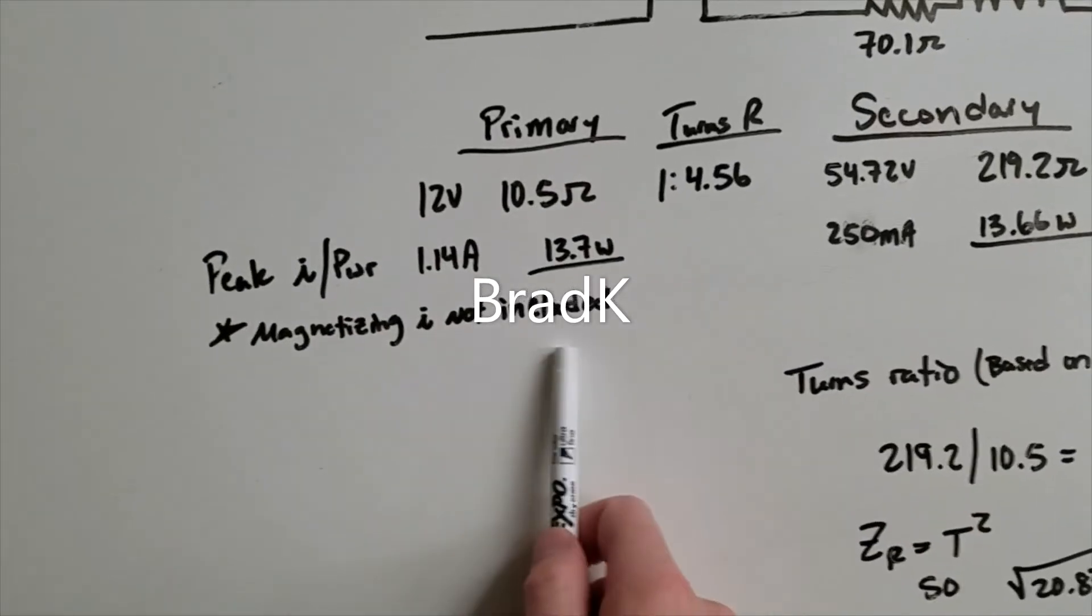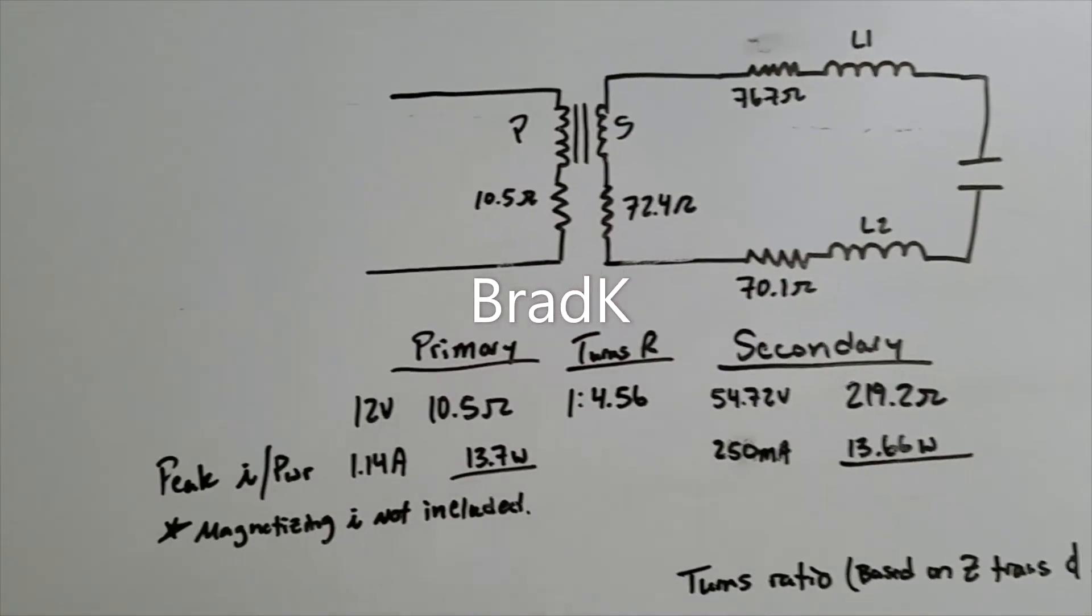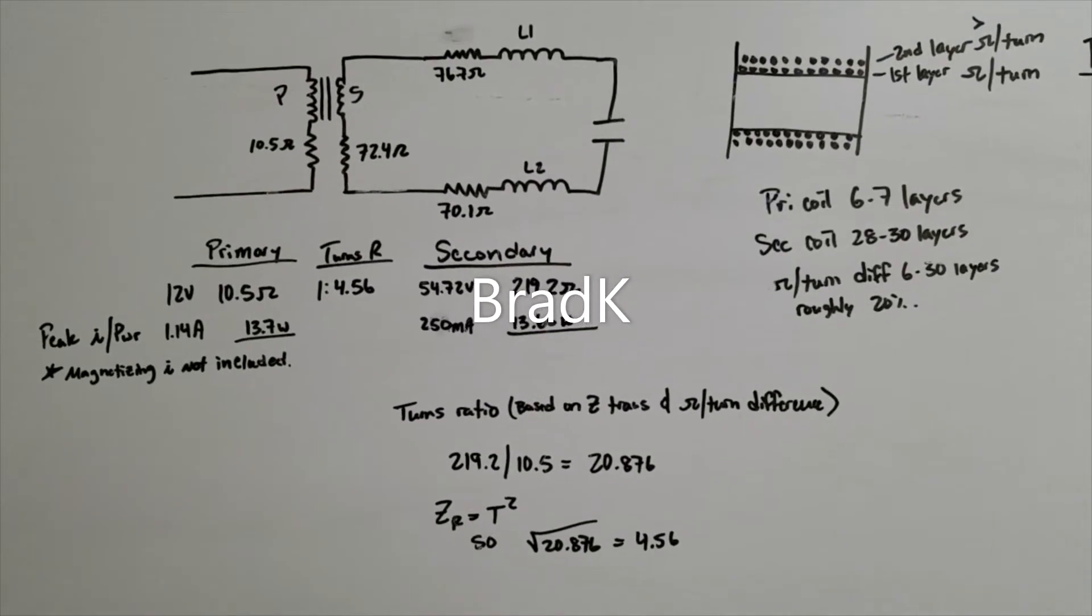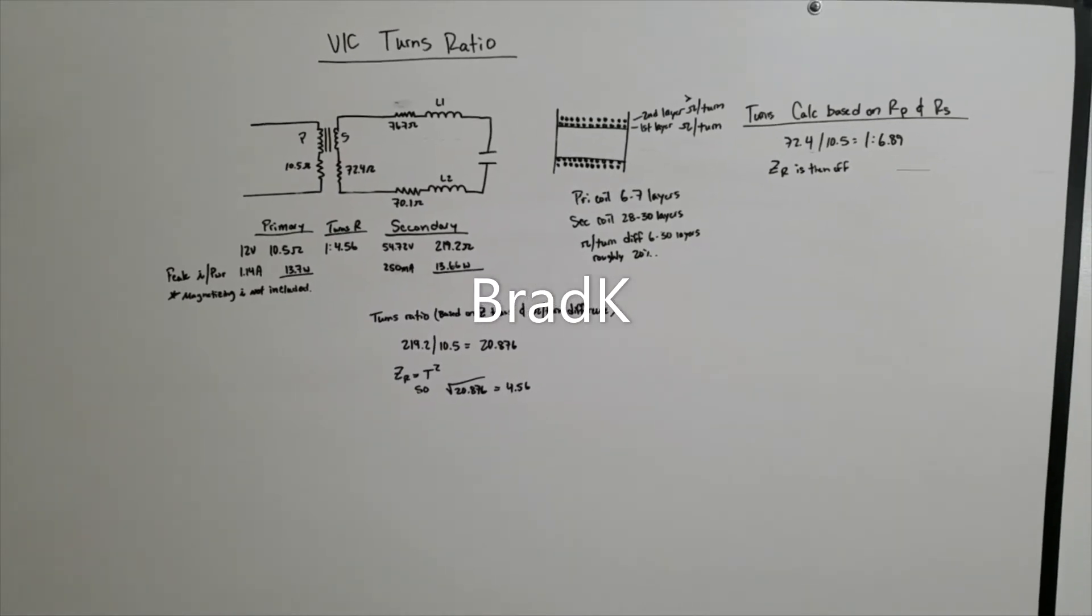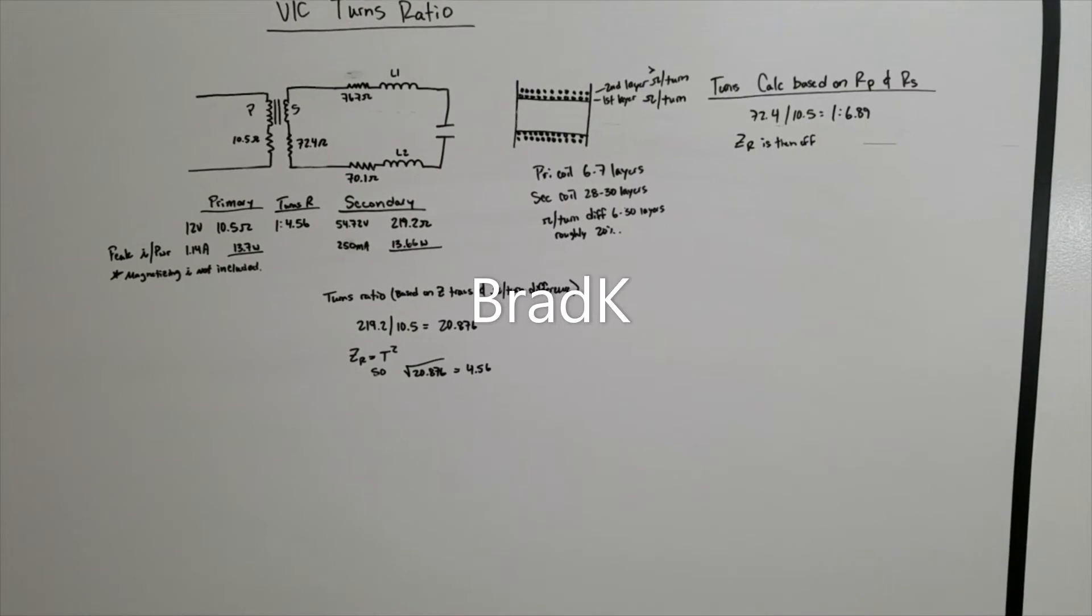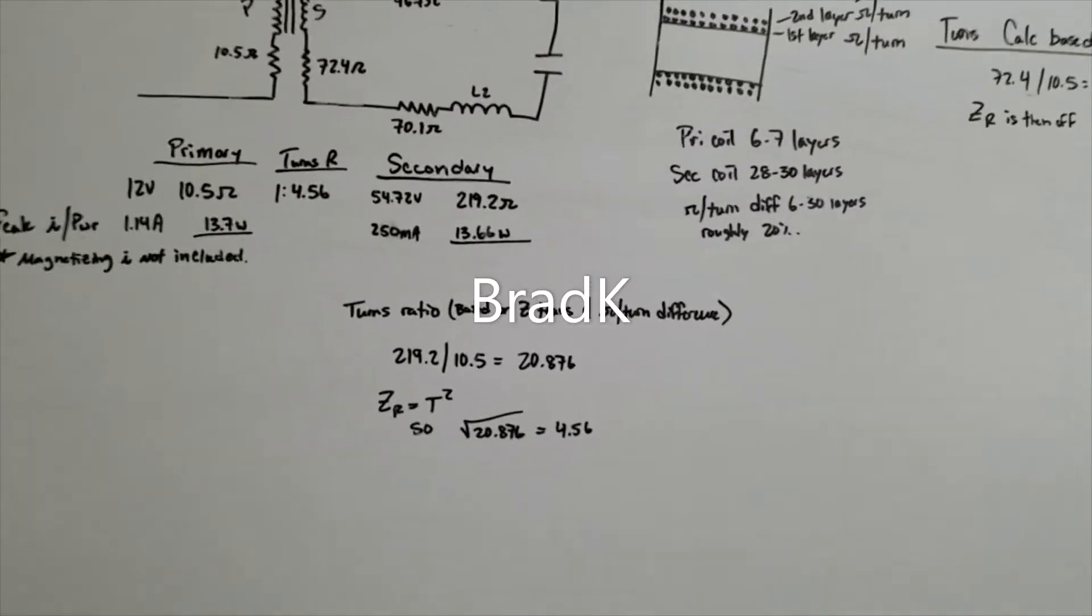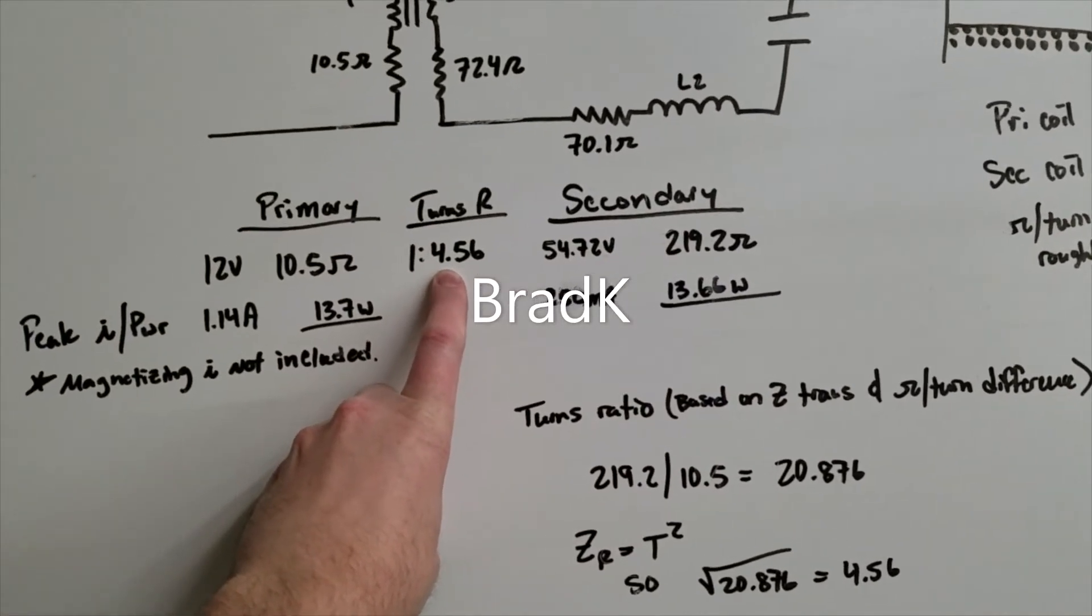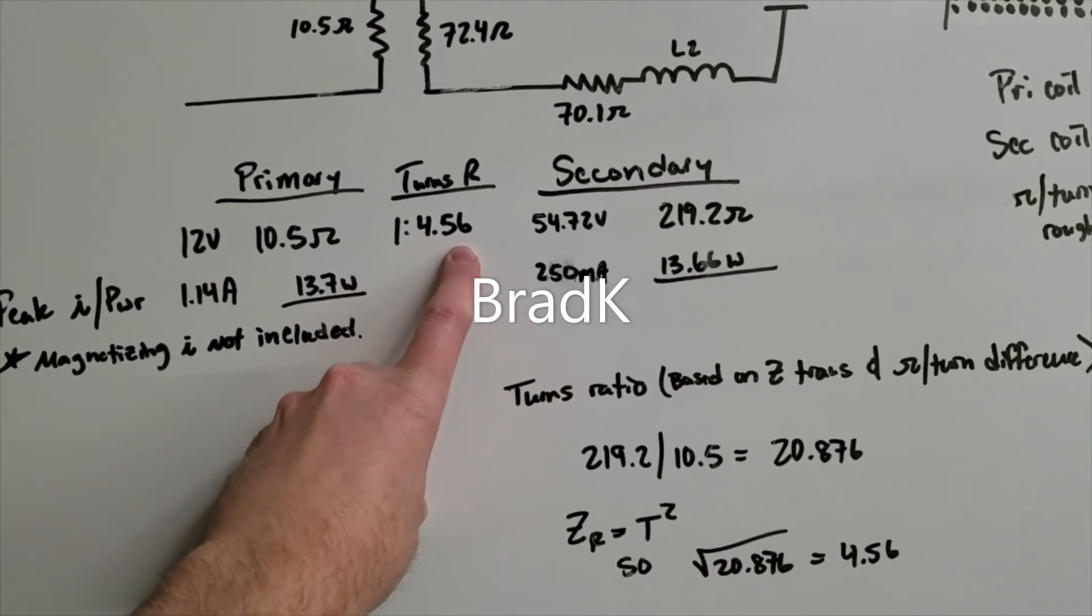This doesn't include the magnetizing current, the primary coil will have more current flowing through it, because it also magnetizes the ferrite core. But, hopefully that all made sense. Now, we know the chokes do not act as secondary coils, and that the turns ratio, this math isn't perfect, but the turns ratio of Stan's transformer, or VIC, was somewhere between 1-4.4 and 1-4.6.